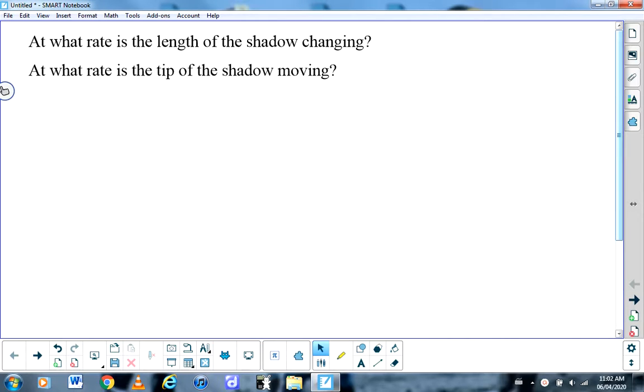And the related rates problem involves a person walking towards a lamppost or away from a lamppost. The classic question is at what rate is the length of the shadow changing? And I don't think that those people are having any difficulty setting up the problem and answering that question. Where the difficulty lies or where the help is needed is in how do you go about answering the second question which is at what rate is the tip of the shadow moving?